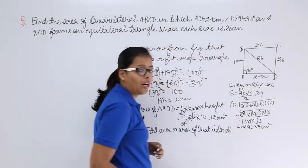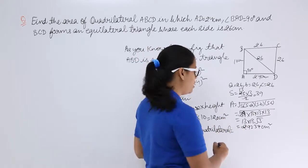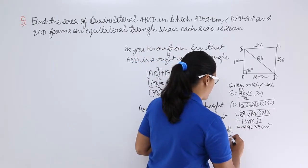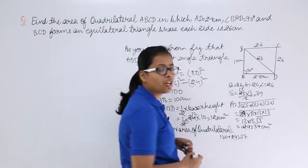is equal to sum of these 120 plus 292.37 and after summation you will be getting 412.37 centimeter square.